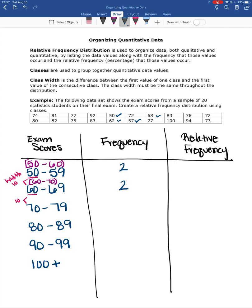Now 70 to 79 or 70 up to but not including 80. One, two, three, four, five, six, seven, eight.